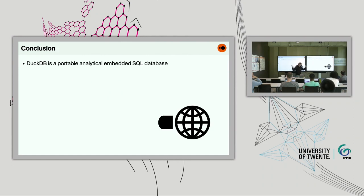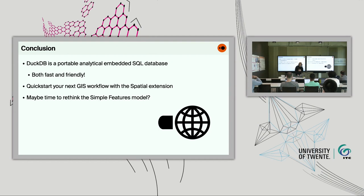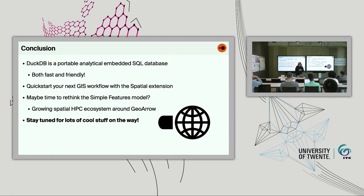Going forward, I'm really excited about the columnar geometry model, and we're going to keep support for these types alongside the geometry type — basically providing an optimized subset of functions for users that know their needs and limitations. I'm also looking forward to focusing on GeoArrow interoperability as the ecosystem grows. It would be really cool if DuckDB Spatial could act as a bridge between the old SQL spatial world and this new high-performance columnar geometry gap. To conclude: DuckDB is a portable analytical embedded SQL database that is both fast and friendly. Next time you're struggling with conda environment conflicts from geospatial dependencies, give DuckDB Spatial a try. And maybe it's time to rethink the simple features model for high-performance computing. Thank you.